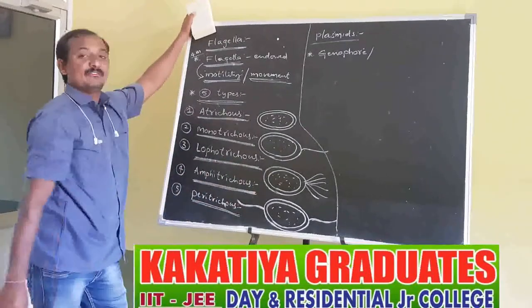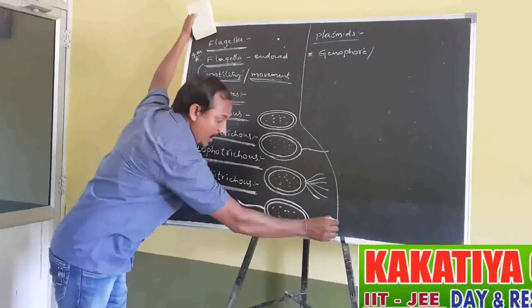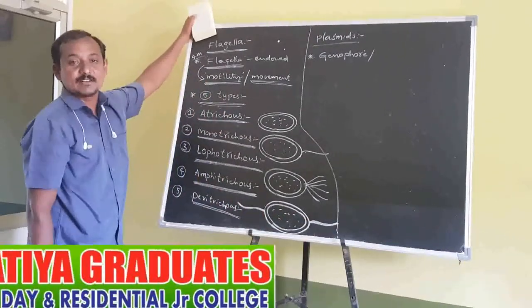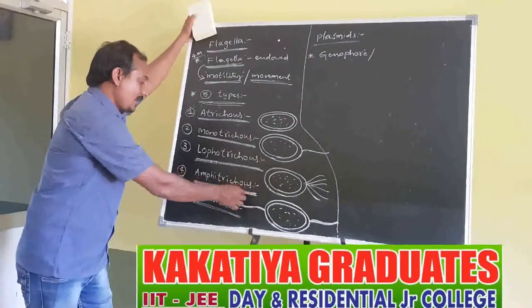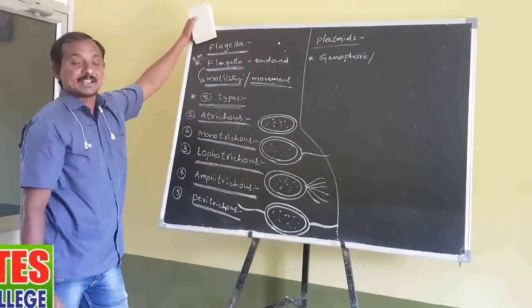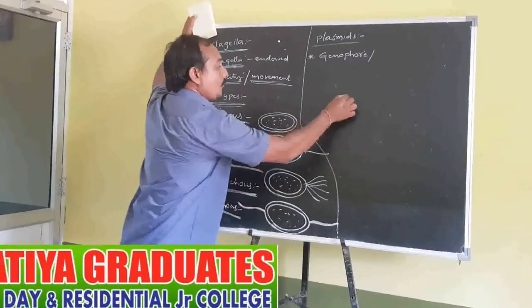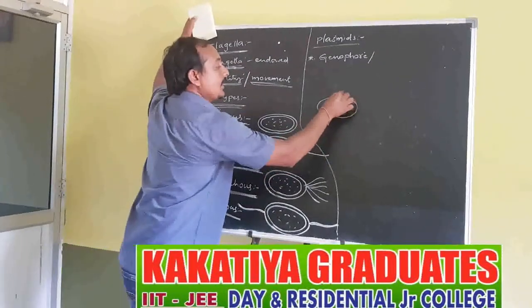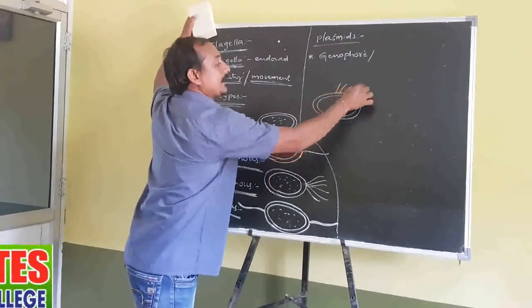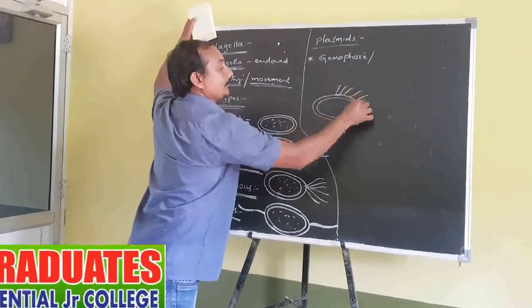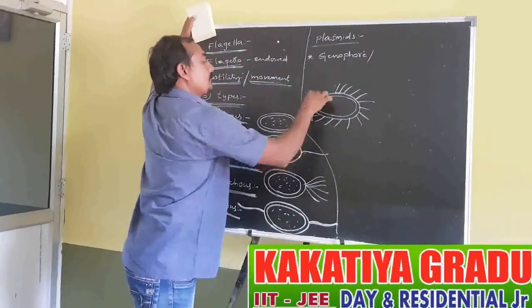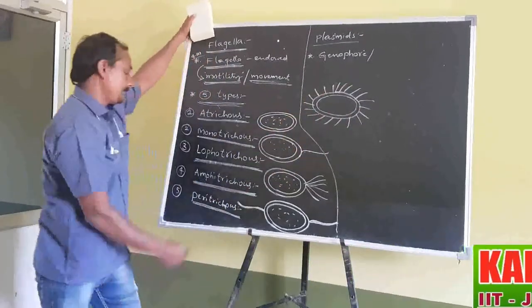The fourth type is Amphitrichous — one or many Flagella present at both ends of the bacterium cell is called Amphitrichous. And the last type is Peritrichous — Flagella distributed all over the surface of the bacterium cell is called Peritrichous.